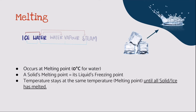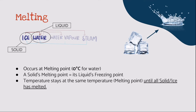During melting, heat is gained. The heat gain converts solid ice into liquid water, and this happens at the melting point, which is 0 degrees Celsius for water. Take note that the solid's melting point is equal to its liquid's freezing point. During melting, temperature stays at the melting point until all solid ice has melted. In other words, as the ice is melting, its temperature remains at 0 degrees Celsius.